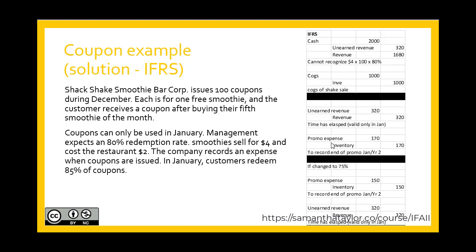We then book the promo expense or cost of goods sold for $170, reflecting that 85% of coupons were redeemed: 100 coupons times 85% times $2 per shake equals $170 of inventory walking out the door. If instead 75% of coupons were redeemed, nothing changes as far as our revenue portion — it's still $320, because it relates to the amount of unearned revenue from December. What does change is the amount of expense recorded — we book the actual expense as coupons are redeemed.